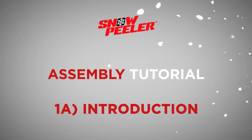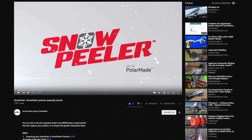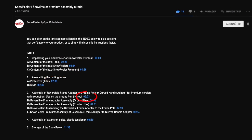Thank you for purchasing the Snow Peeler Snow Rake by Polarmade. Assembling your Snow Peeler usually takes 15 minutes or less. You can click on the time segments listed in the index below to find specific instructions faster.